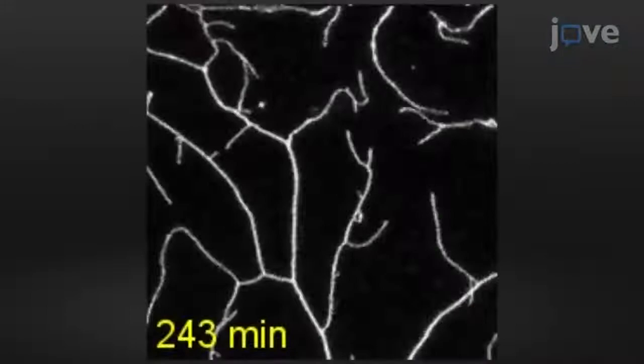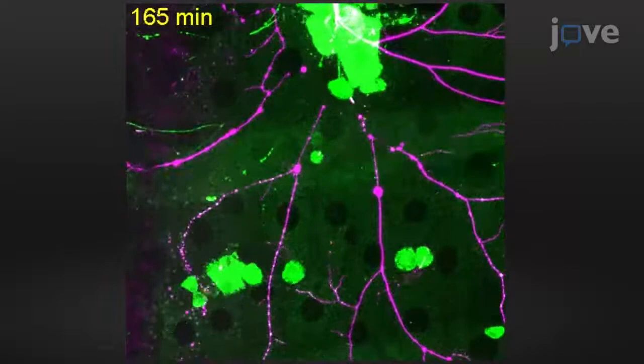Being able to image the same neuron for hours can reveal how long-term global changes of dendritic patterns arise from short-term behaviors at the individual branch level.